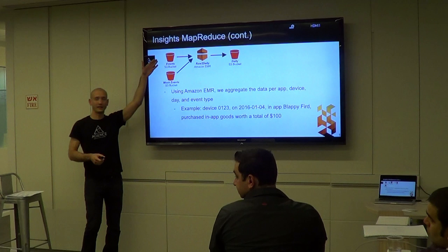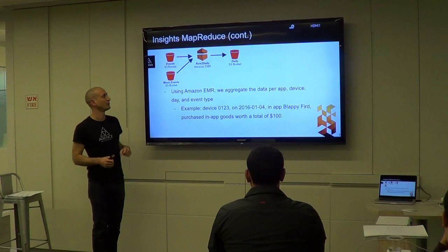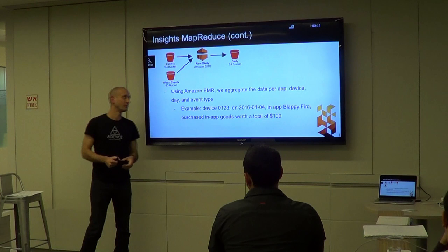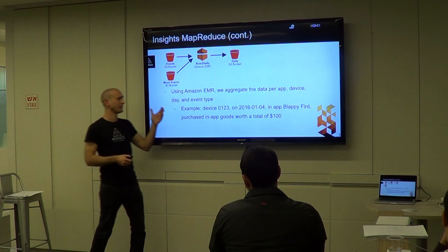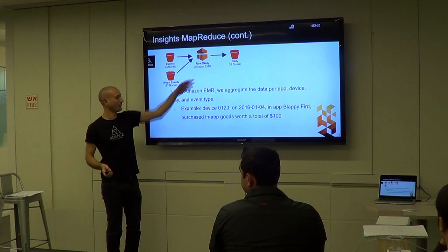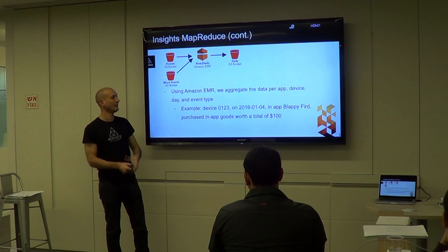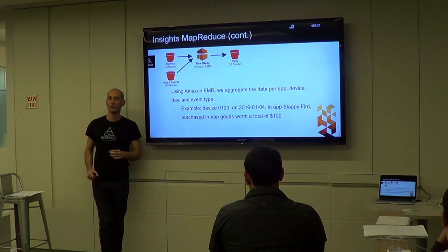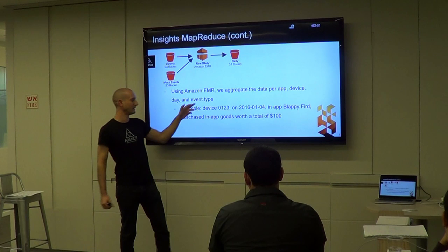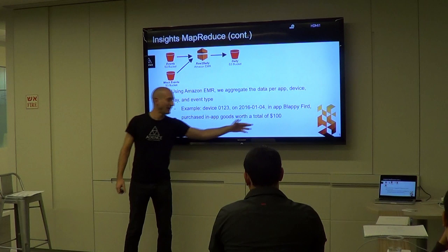I have the events from the last day and the mock events for installations. We run the raw2daily MapReduce, which aggregates data per app, device, day, and event type. For example, a result record tells us: on device 0123, on January 4th 2016, in the app Lapiford, there were in-app goods purchased worth a total of $100. The key is app, device, day, and event type; the value is $100. That's the first aggregation.